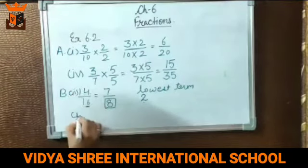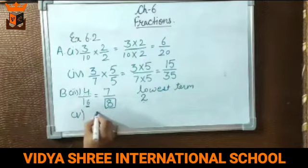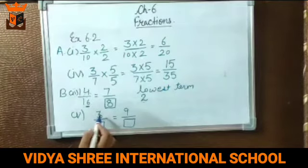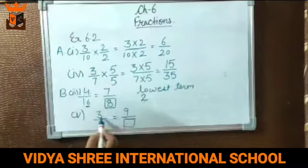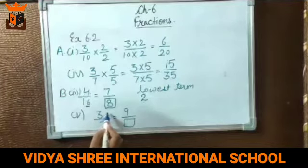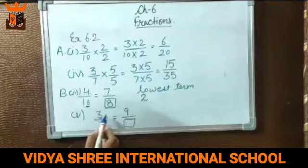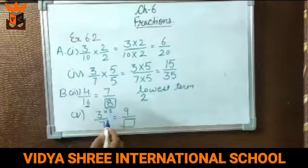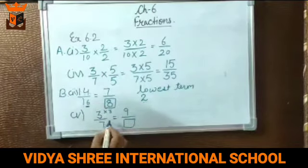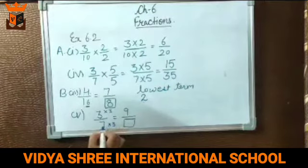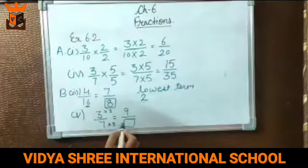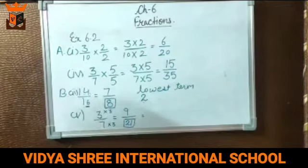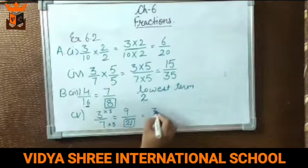Now the third part: 3 by 7 and 9 by blank. We can see that 9 is 3 times 3 — meaning the numerator is multiplied by 3. So to make it an equivalent fraction, we have to multiply the denominator also by 3. Denominator ko bhi 3 se multiply karna hoga. So 9 by 21 is the equivalent fraction of 3 by 7.